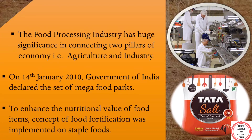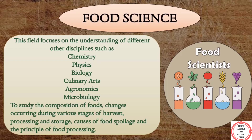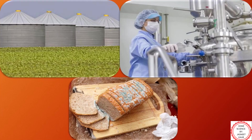There are certain basic concepts to understand — food science, food processing, food technology and food manufacturing. Food science is a field which includes the understanding of other science-related fields. The study of this field helps us in understanding the composition of foods, changes occurring during various stages of harvest, processing and storage, causes of food spoilage, and the principles of food processing.